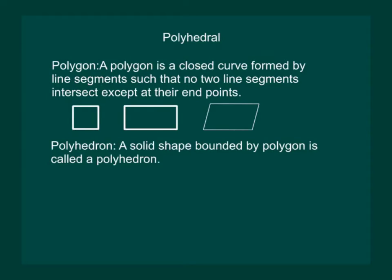Now let us define a polyhedron. A solid shape bounded by polygon is called a polyhedron. For example, a cube is made up of squares and a cuboid is made up of rectangles.